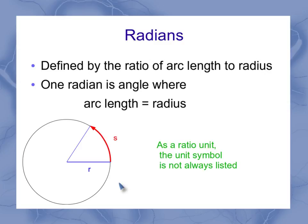Because it's defined by a ratio, the unit symbol's not always listed. So sometimes you'll have things where the angle is listed as a number without a unit symbol after that. And if there is no unit symbol after the number, but it's an angle, it's got to be in radians.